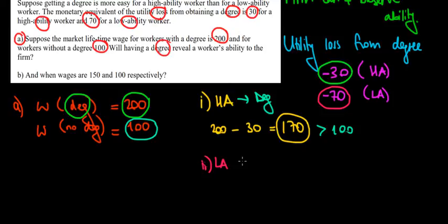His net utility is 200 dollars minus the 70 dollar loss of getting the degree, that would be 130 dollars. If he gets 130 dollars from getting the degree, although he is low skilled, and his alternative is getting 100 dollars without the degree, even the low ability worker is going to go for the degree.